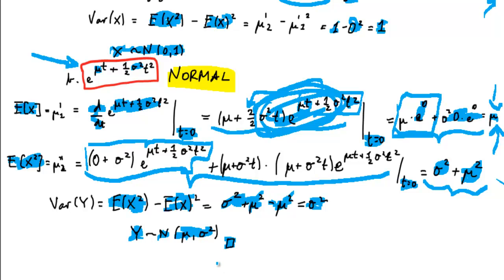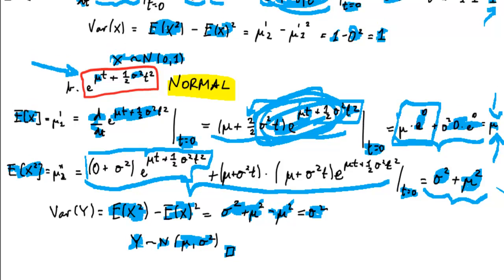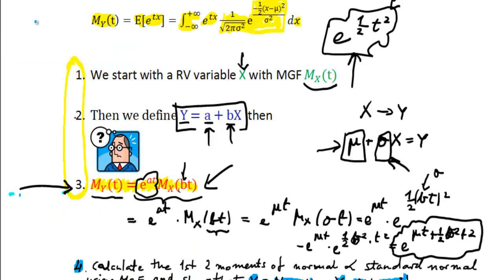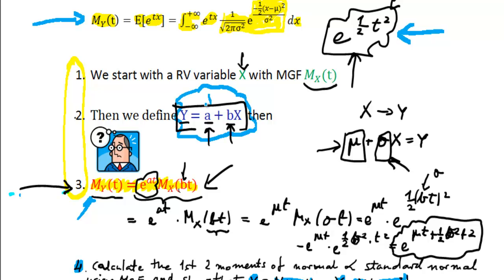I hope this convinces you that there is no need to solve complex integrals to derive moment generating functions if you already have a base case. If you know the transformation between your original and transformed variable is a linear combination — shifting by a constant a and scaling by b — you can use this key property to derive MGFs of transformed variables. Thanks.